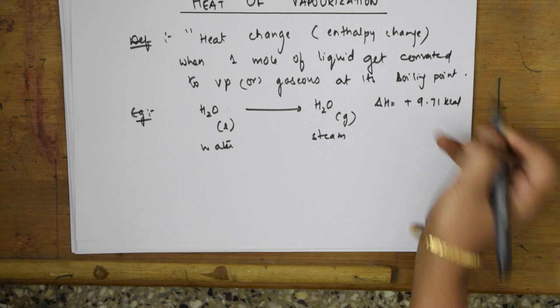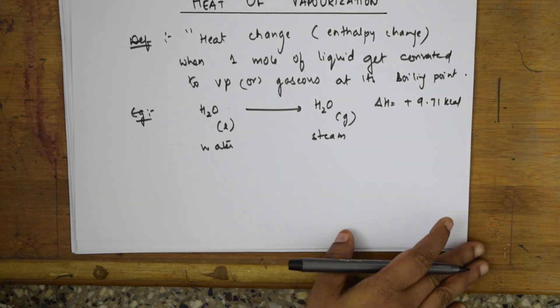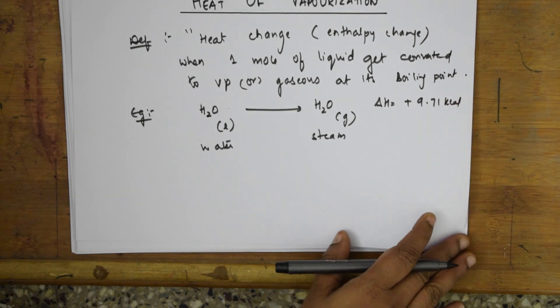The definition of heat of vaporization: it is the heat change or enthalpy change when one mole of a liquid is converted into its vapor or gaseous state at its boiling point. Vaporization occurs at the boiling point only.